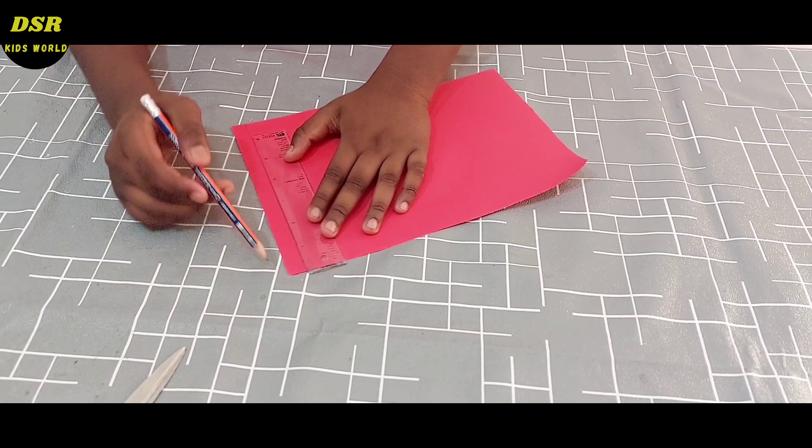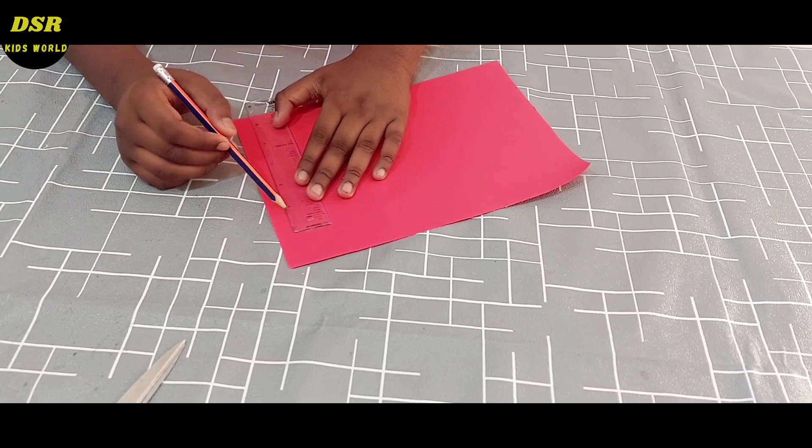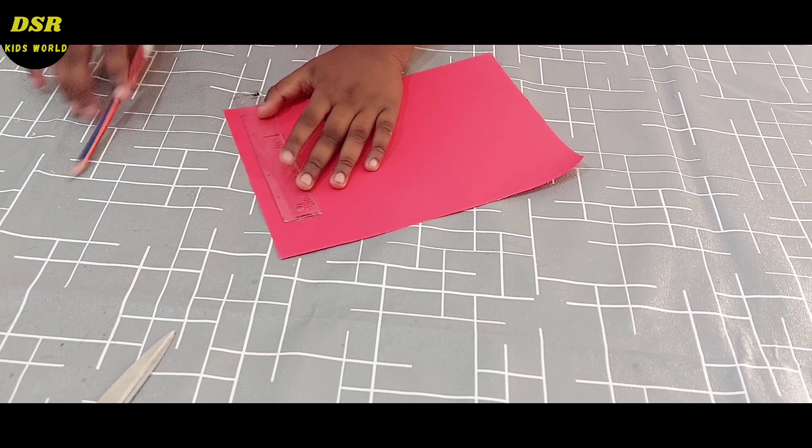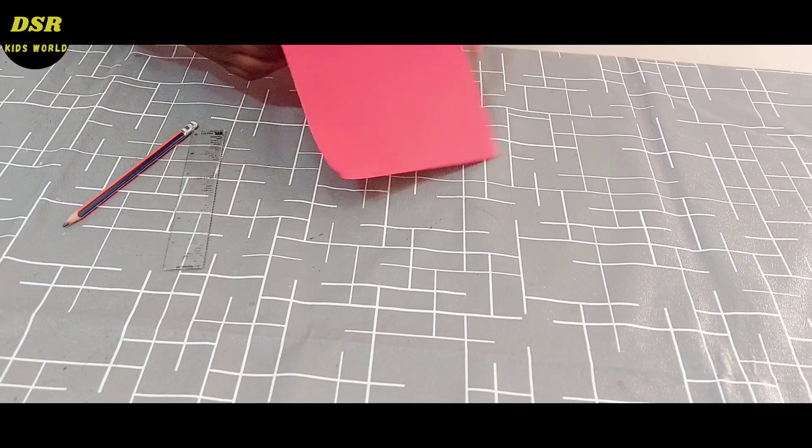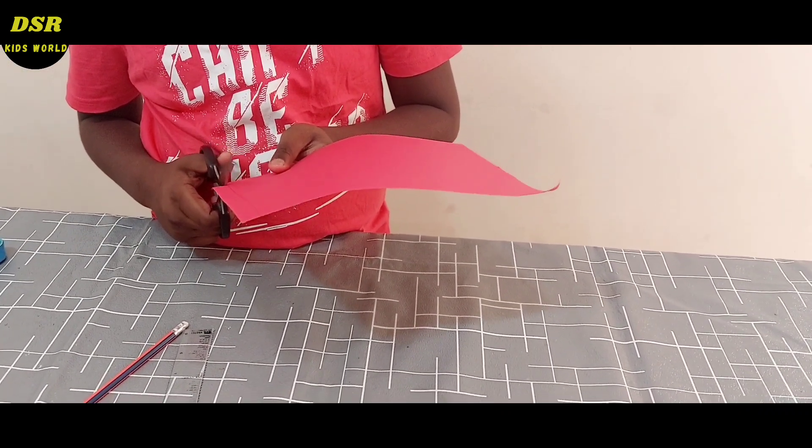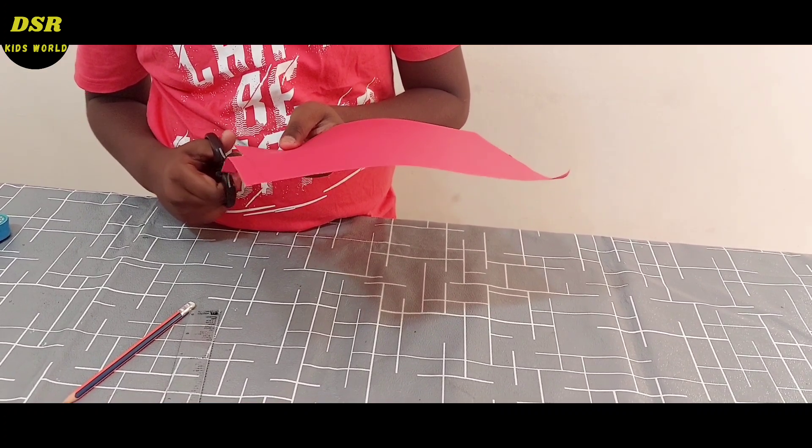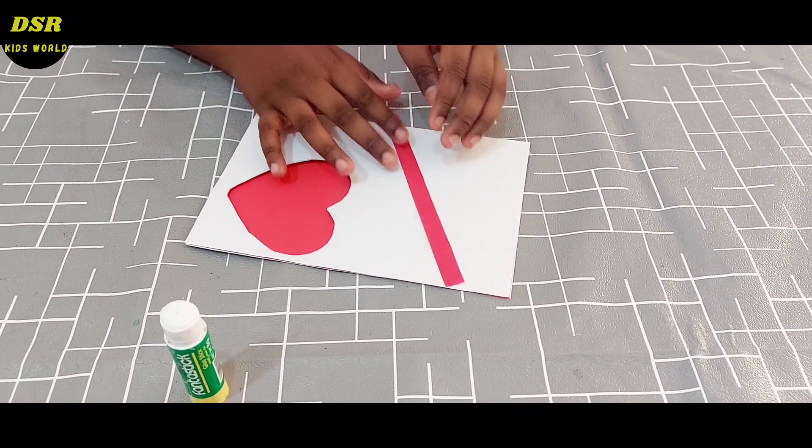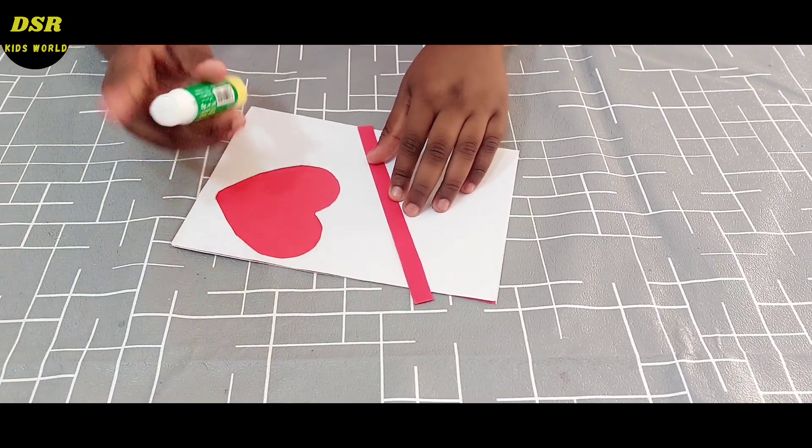Now, I'm going to draw and cut a strip of paper. We're going to take the strip of paper and stick it like this. We can cut the remaining after sticking.